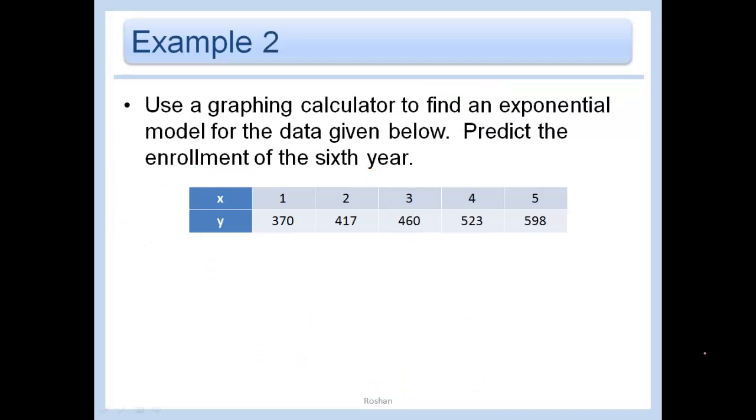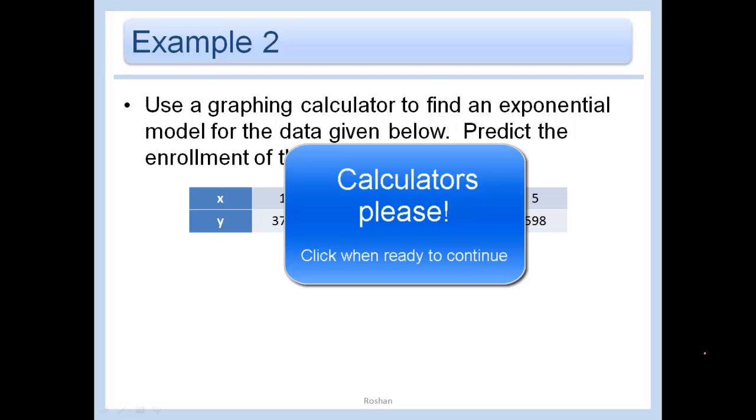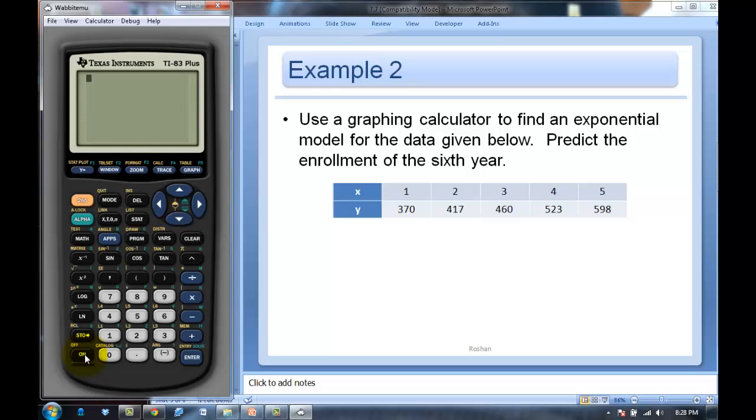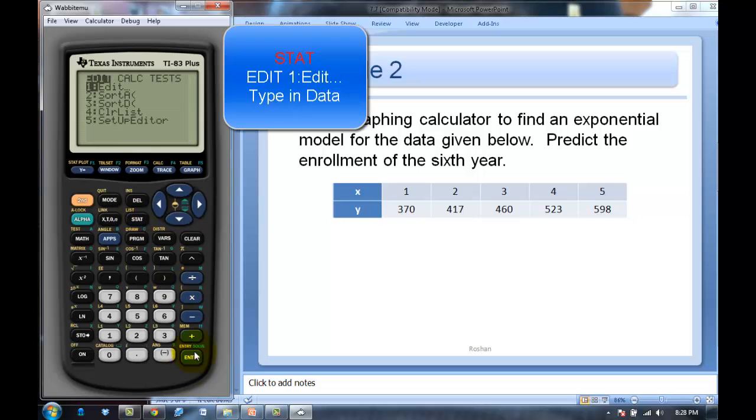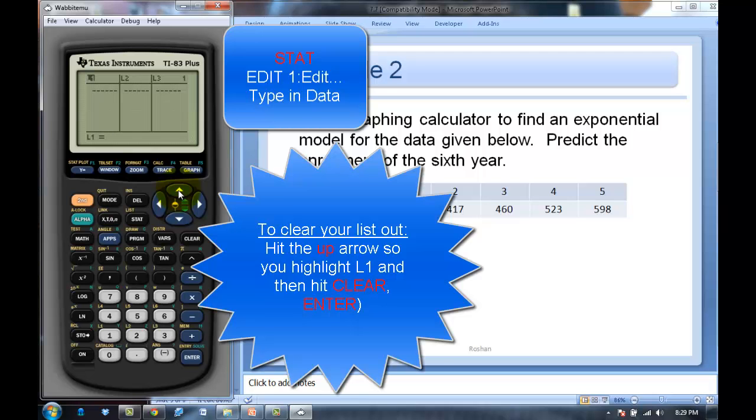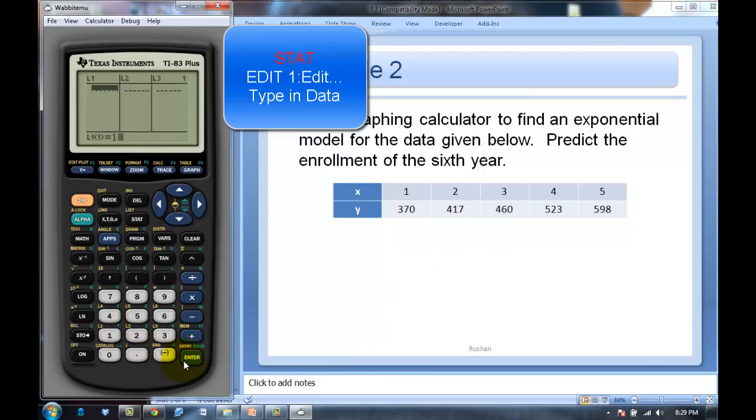On this question we're going to have to get our graphing calculator, so please go get that. What we're going to do in this problem is we're going to do it a lot like what we did with the Linreg way back at the beginning of the course. And we're going to put all this information into our stat plot. So we hit the stat key and we're going to edit our list. So just hit the stat key and then edit number 1. If there's something in your list, you just go up to L1 and you hit the clear button. Do not hit delete. Hit clear and then enter. And that should clear out whatever you have. Now just type in the data: 1, 2, 3, 4, 5.